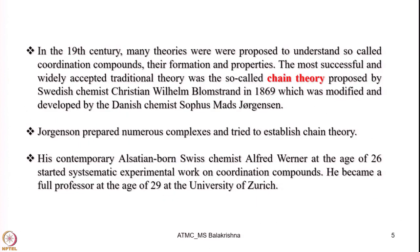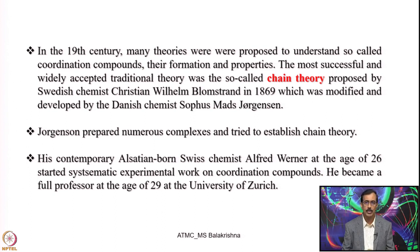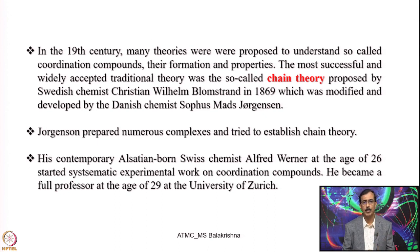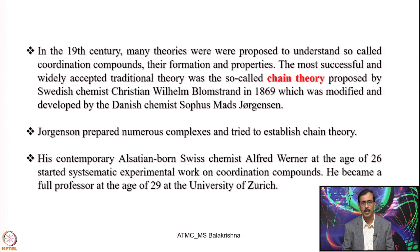In the 19th century — that is, during the period when Mendeleev proposed the periodic table — many theories were proposed to understand the so-called coordination compounds, their formation and properties. The most successful and widely accepted traditional theory at that time was the so-called chain theory, proposed by Swedish chemist Blomstrand in 1869, which was modified and developed by Danish chemist Sofus Mads Jorgensen.